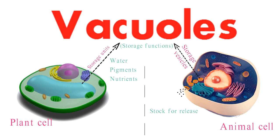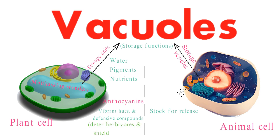The central vacuoles of plant cells are multitasking wonders. Not only do they harbor waste and nutrients, but they also store pigments like anthocyanins, which provide vibrant hues, and defensive compounds like alkaloids, which deter herbivores and shield the plant.